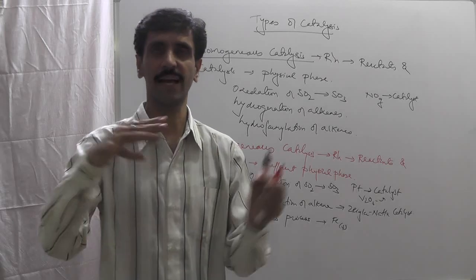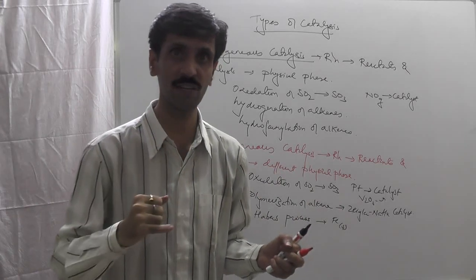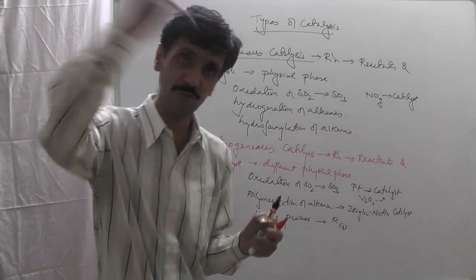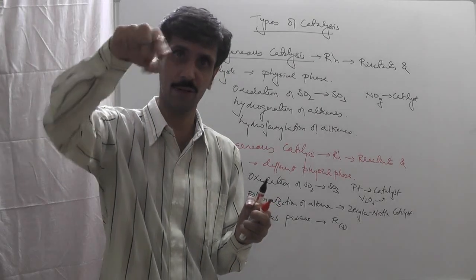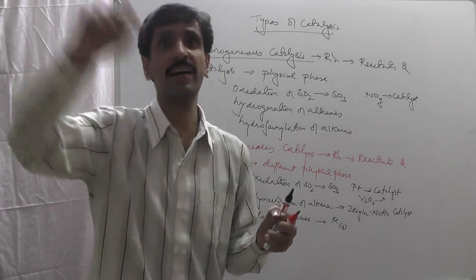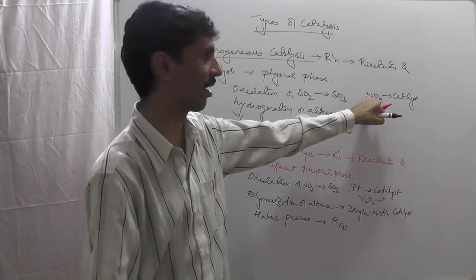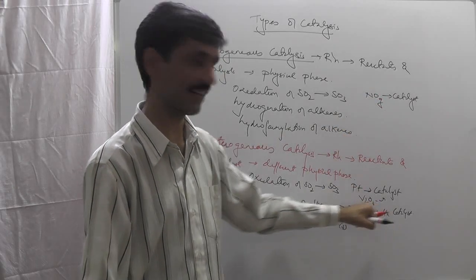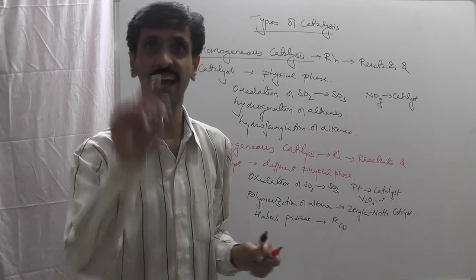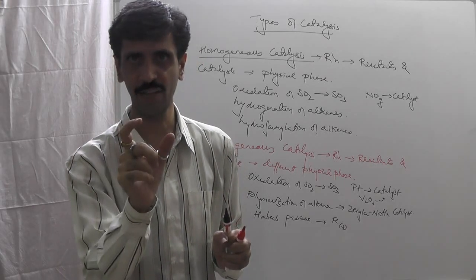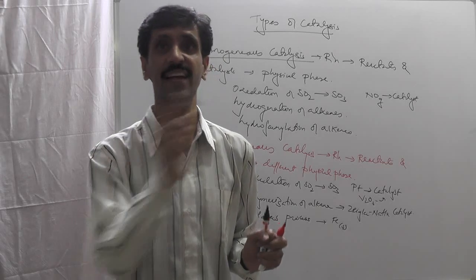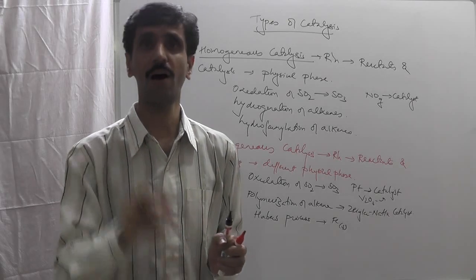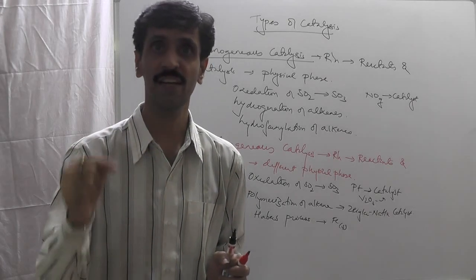So these are the types of catalysis — homogeneous and heterogeneous. When we use the word 'catalysis,' we are talking about reactions. The substance used is called a catalyst, and the process is called catalysis. In the SO2 oxidation reaction with NO, we call NO a homogeneous catalyst; whereas Ziegler-Natta catalyst and iron (Fe) are called heterogeneous catalysts.